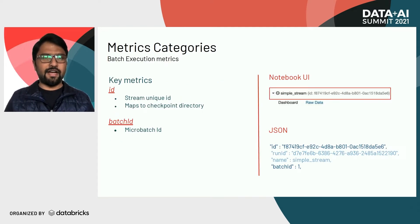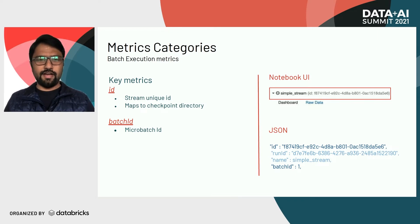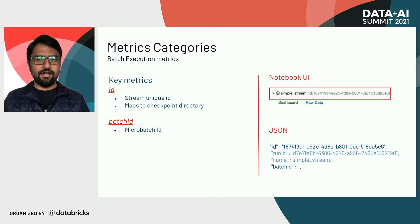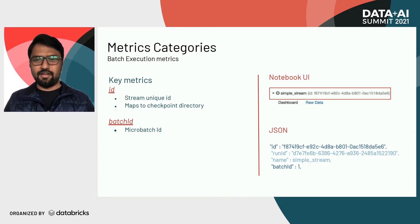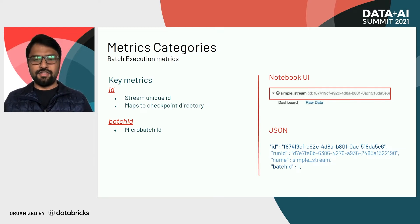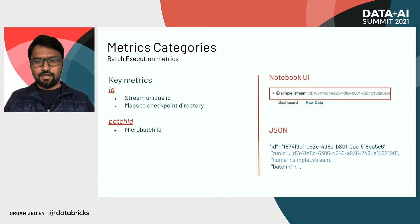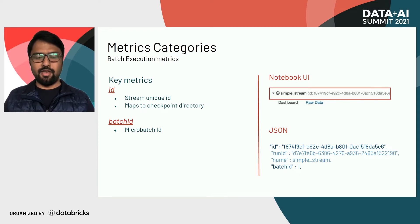The first category is batch execution metrics. Two key metrics here are ID and batch ID. ID is the unique ID generated for every structured streaming query whenever you start it. It is persisted inside the checkpoint directory, and until you change the checkpoint directory, this unique ID won't change. You can find the ID for any given stream in the notebook UI. Batch ID is the micro batch ID — it represents which micro batch the query progress log you're reading corresponds to.